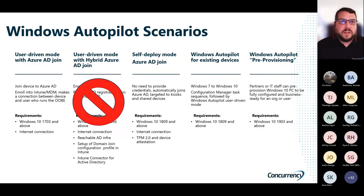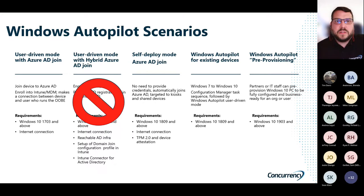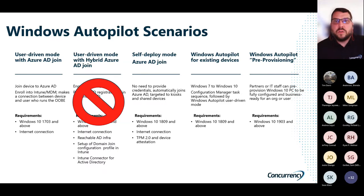Some Windows Autopilot scenarios: user-driven mode, which is what we were looking at there. You can do hybrid Azure AD join, but that's not what we're talking about today. A self-deploy mode, which can be used for things like kiosks or shared devices. You can Autopilot existing devices. And then pre-provisioning — you can use your IT staff to pre-provision, or if you have a partner you want to do it for you, that's also an option.